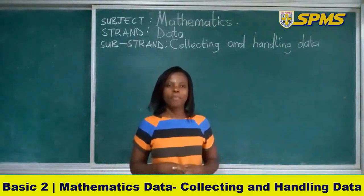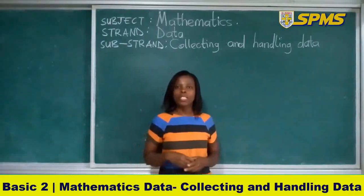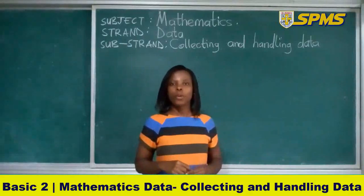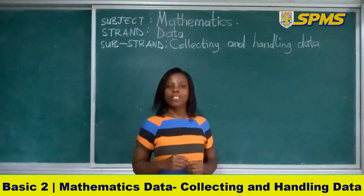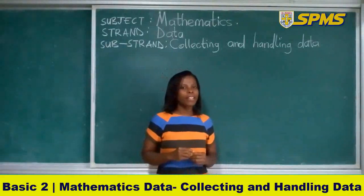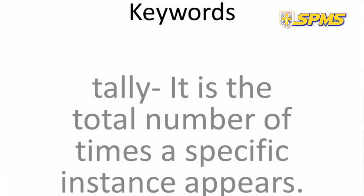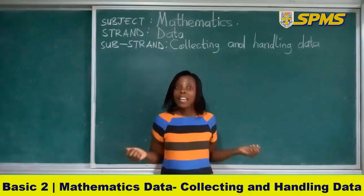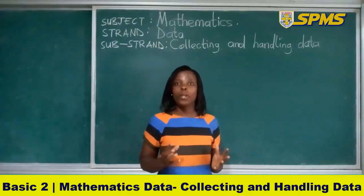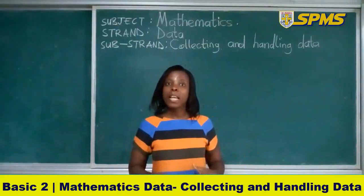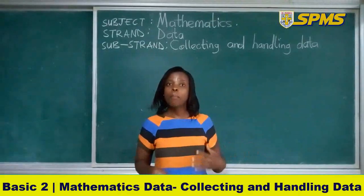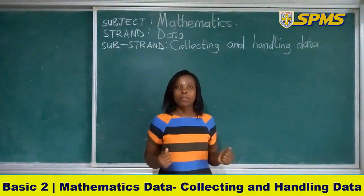We are going to use our keywords that we used the previous time to help us understand our lesson in detail. We looked at the word tally — it is the total number of times a specific instance appears. For example, we looked at the number of times the green pepper, sweet pepper, or tomato appeared.